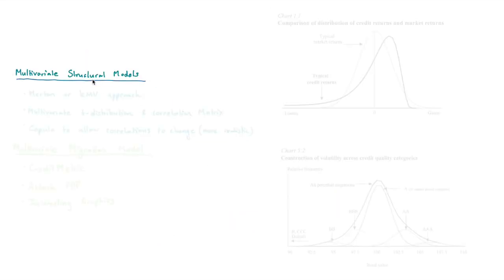The first one I want to talk about is the multivariate structural model. You can take the Merton or KMV approach, which we spoke about earlier, and extend them for a whole bunch of bonds. In this situation, you might use the multivariate T distribution with a correlation matrix, or you can be a little bit fancy and use a copula, which will allow the correlations to change. I'll try adding information about copulas and multivariate distributions. Those of you who are interested in the maths can go through it.